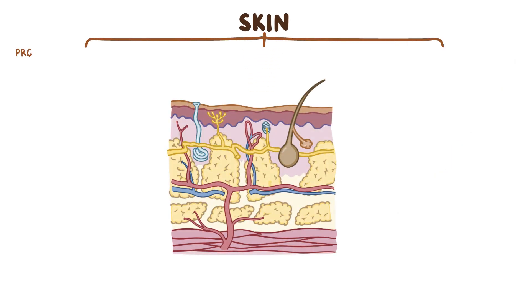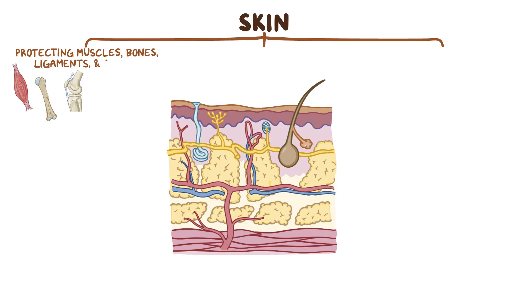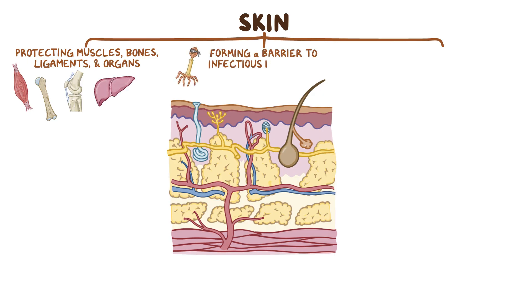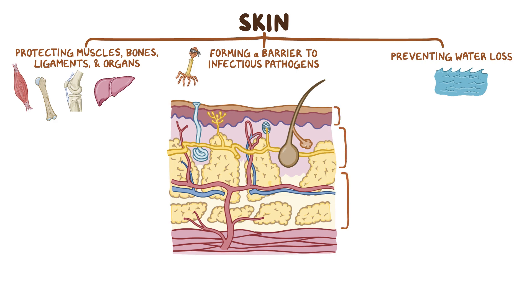The skin plays an important role in protecting underlying muscles, bones, ligaments, and internal organs, forming a barrier to infectious pathogens and preventing water loss from the body. The skin is divided into three layers: the epidermis, dermis, and hypodermis.